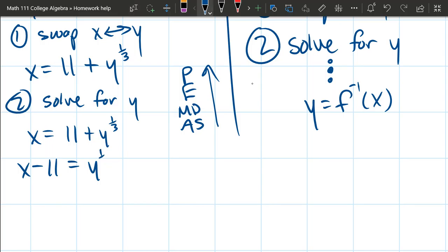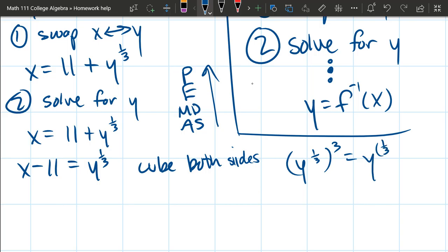So how do we get rid of this one-third power? Well, we take both sides and cube them. Why does that work? It works because y to the one-third power cubed, you multiply powers here. So this is y to the one-third times 3, which is just y to the first power, also known as just y. So that's the reason we're cubing both sides.